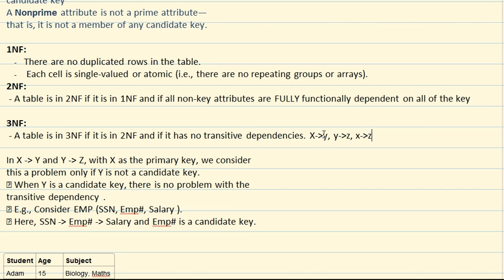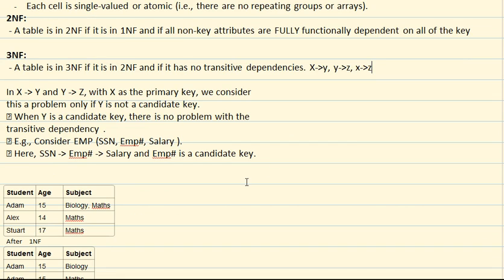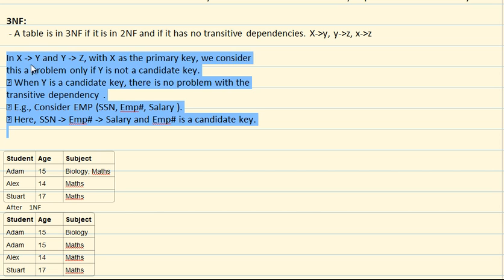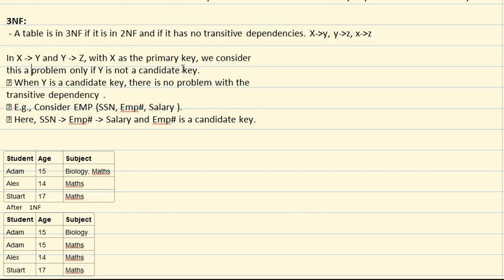We'll come back to that while doing examples. To summarize: 1NF requires all values to be atomic; 2NF must satisfy 1NF and all non-key attributes must be dependent on the key; 3NF disallows transitive dependencies and must satisfy 2NF first. One important note about 3NF: if X determines Y and Y determines Z, with X as the primary key, we consider this a problem only if Y is not a candidate key. If Y is a candidate key, there is no problem with the transitive dependency and the table is in 3NF.